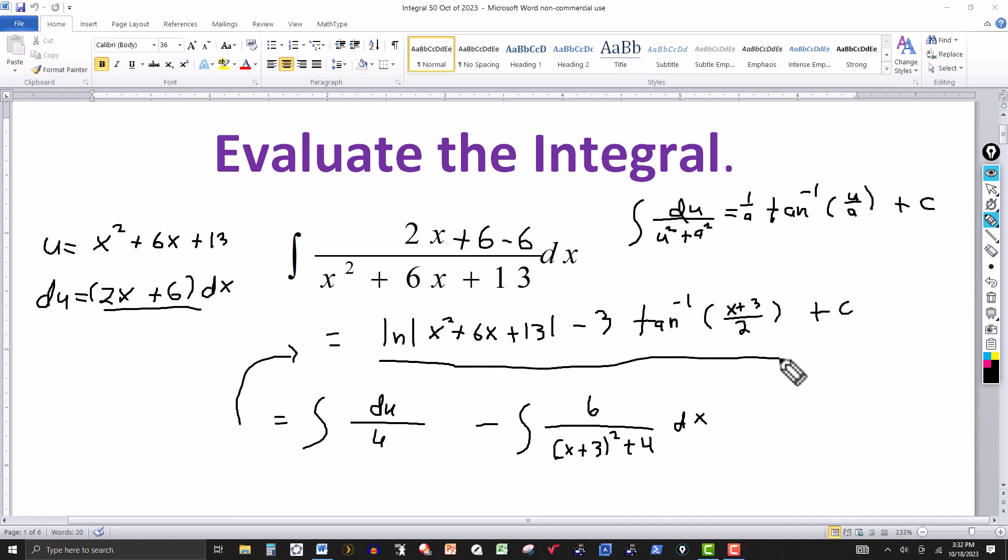So we have the final answer then. Natural log of absolute value of x squared plus 6x plus 13, and then minus 3 tangent inverse of x plus 3 over 2, plus the constant of integration.